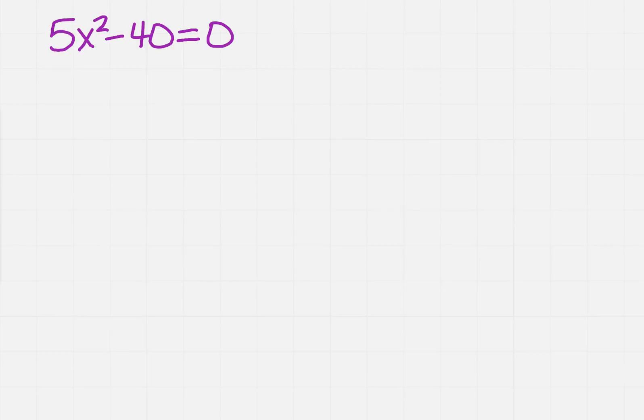We want to solve this equation for x. The first thing that I want to do is I know that 5 is in common to both, so I've factored it out and got x squared minus 8 equals 0.